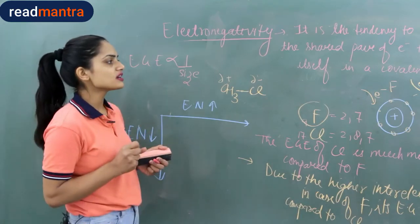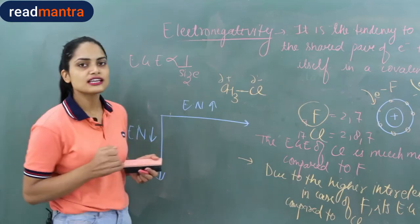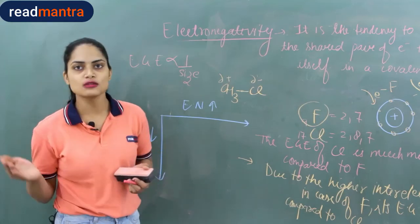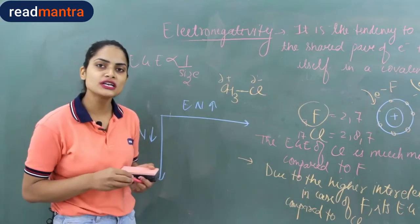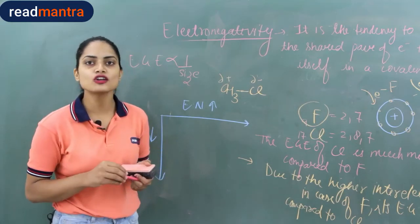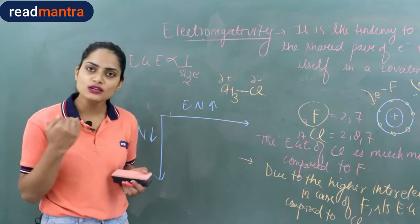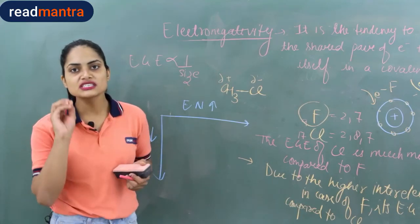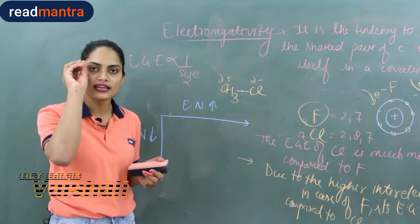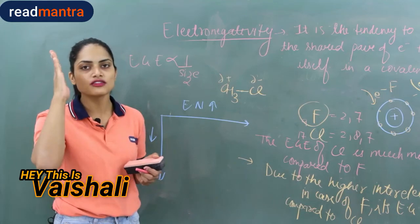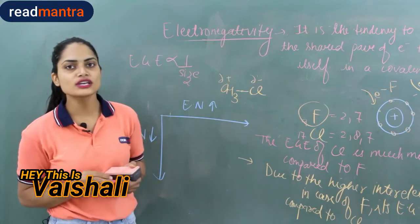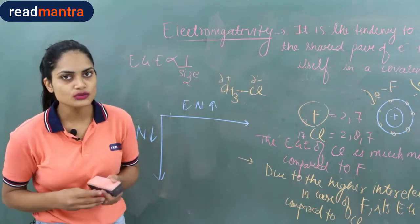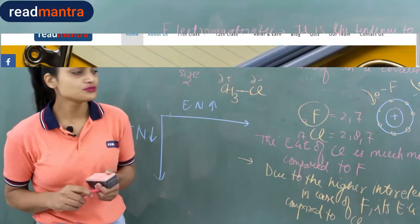Our next topic is the anomalous behavior of second period elements. The first element of each group shows different behavior compared to the rest of the members of that group.